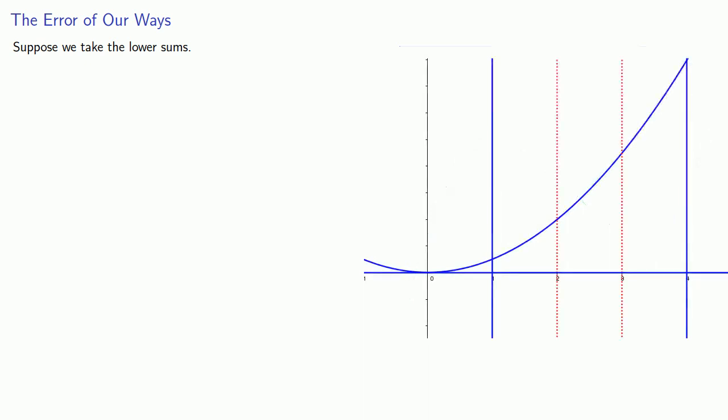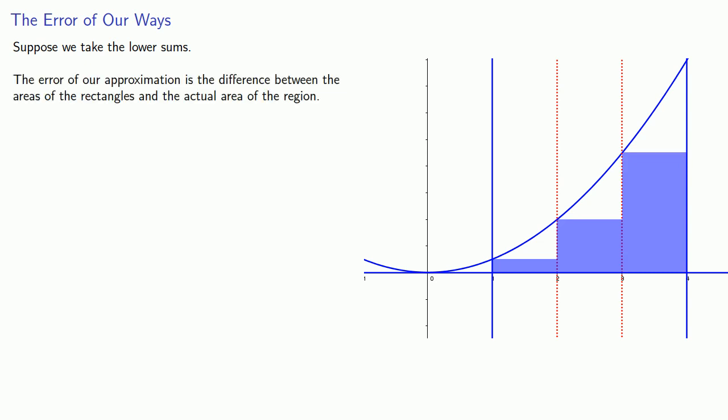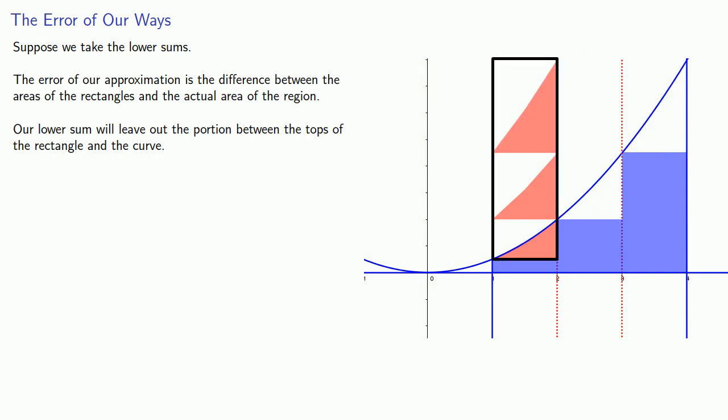So let's partition our region and then draw the lower rectangles. The error of our approximation is the difference between the areas of the rectangles and the actual area of the region. Our lower sum will leave out the portion between the tops of the rectangle and the curve. Can we find a bound for this area? Rather surprisingly, we can. We're going to slide all of these error pieces over to one side. And we know that all of these error pieces fit into a rectangle, and so this gives us an upper bound for the error.